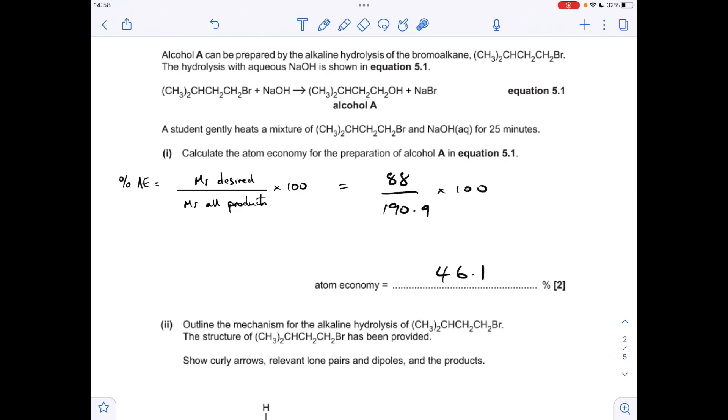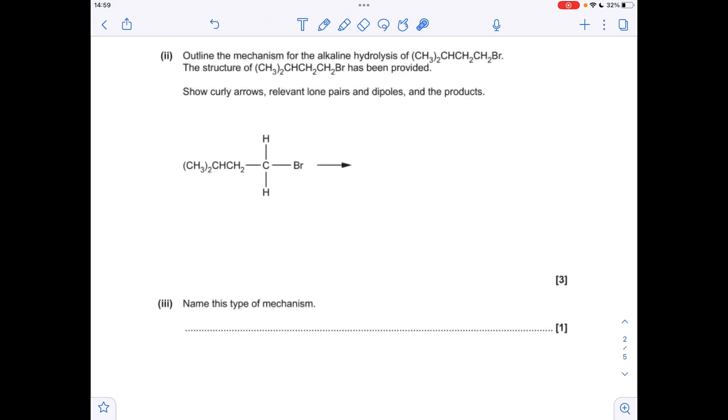We'll just put the numbers in so we'll get an atom economy of 46.1%. Moving on to the mechanism now for the alkaline hydrolysis of this haloalkane. Obviously it's going to be hydrolyzed by hydroxide ions, so we need to put a dipole across the carbon-halogen bond which is that way around. Take a curly arrow from that lone pair to the carbon and we break the C-Br bond by heterolytic fission.